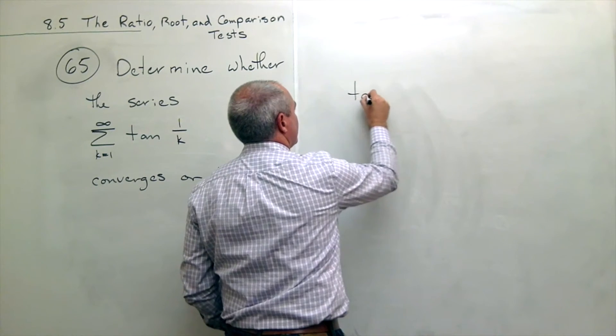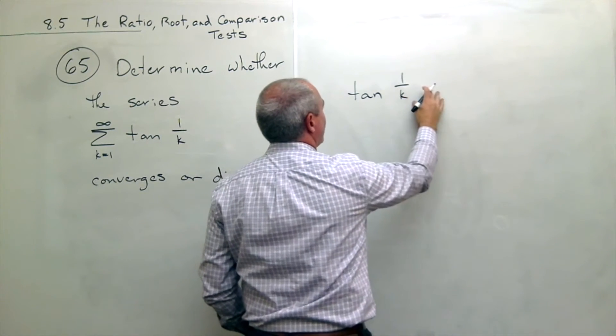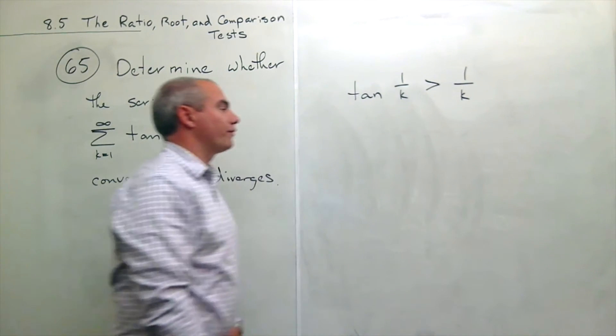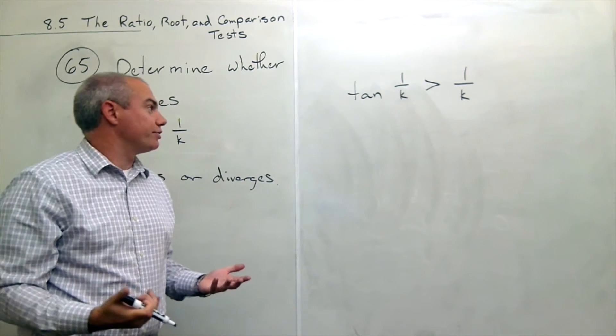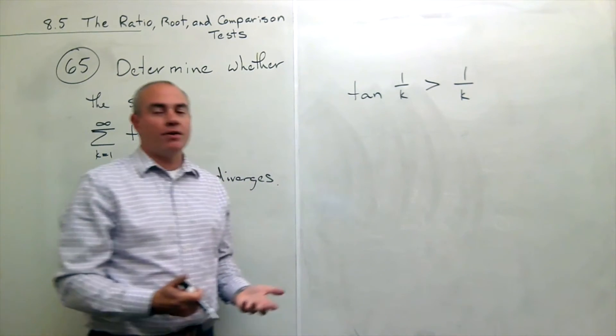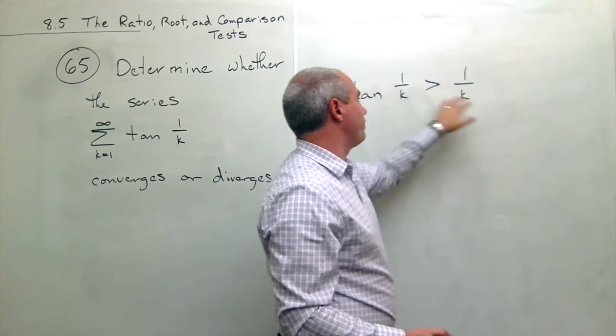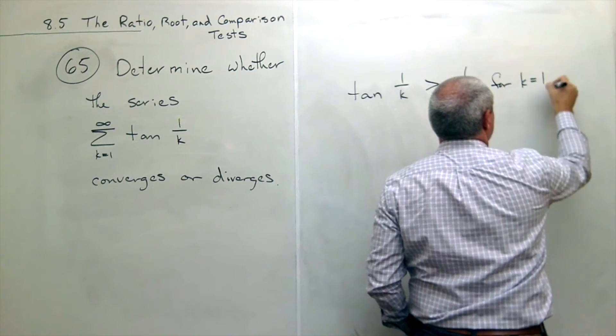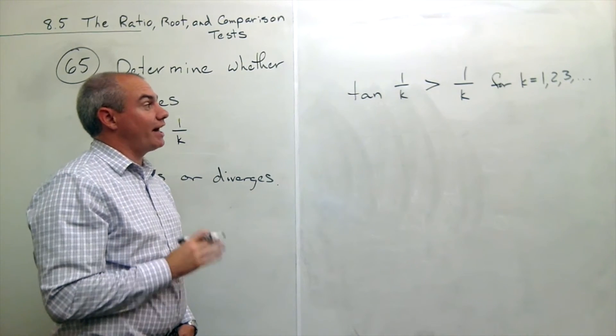That tangent of 1 over k as a quantity, that's slightly bigger than 1 over k. For all values of k that are positive integers, we see that this relationship is true. And this is exactly what I need for a comparison test, is that these guys are bigger than these guys for k equal to 1, 2, 3, and so on.